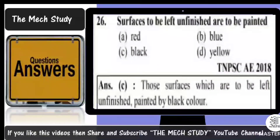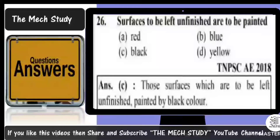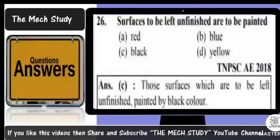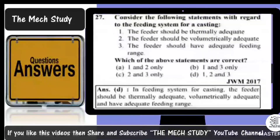Next question: surfaces to be left unfinished are to be painted — option A: red; option B: blue; option C: black; option D: yellow. The correct answer is option C — black — because black color absorbs heat effectively. Surfaces left unfinished are painted black.